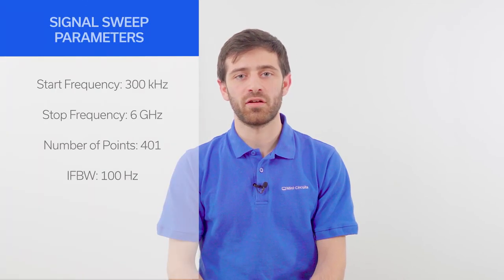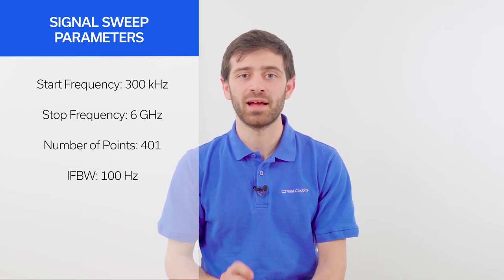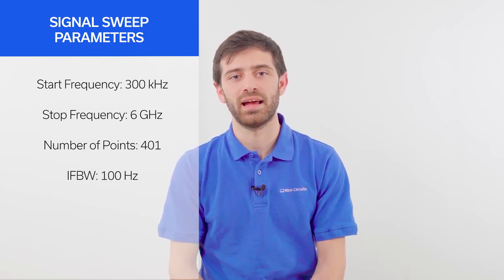Start the calibration process by setting the signal sweep parameters based on the device you're measuring. It helps to have the device connected while you're setting the start frequency, stop frequency, number of points, and resolution bandwidth so that you get an idea of what your measurement will look like after calibration. As a rule of thumb, recalibration is typically required any time these settings are changed.